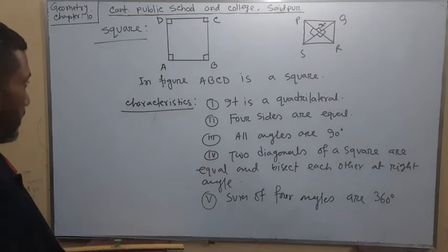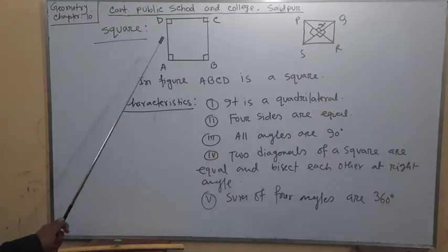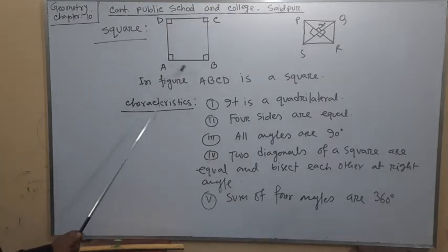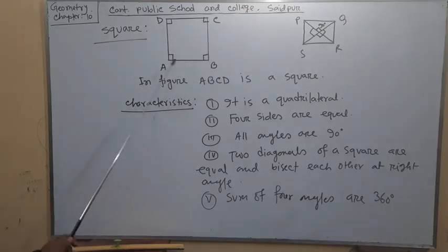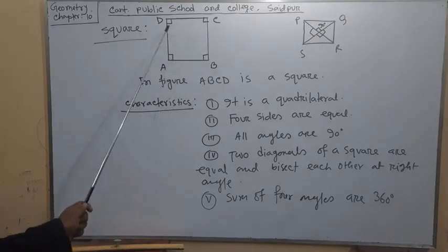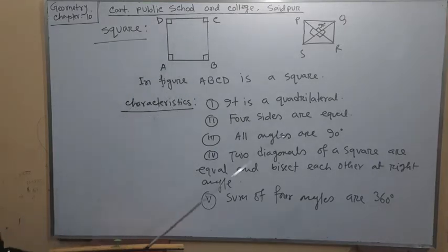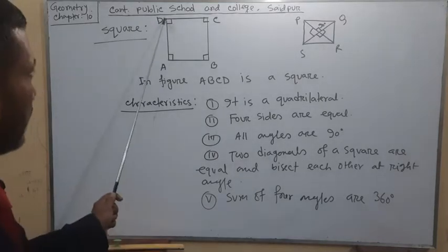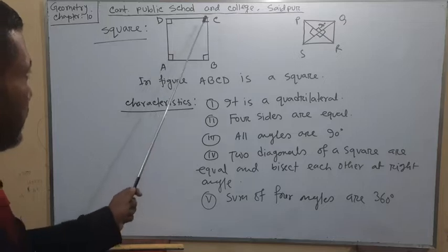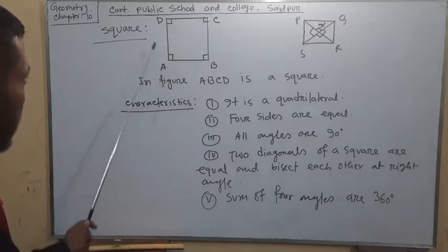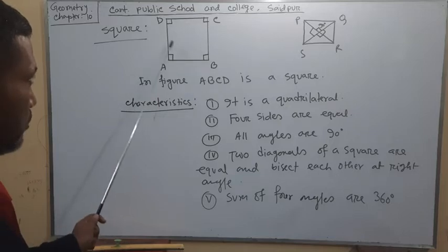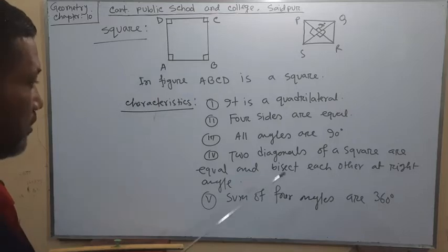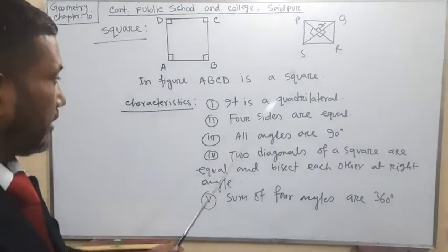The main characteristics of the square: the measure of the four sides will be equal; all angles will be 90 degrees. For the two diagonals, if we connect A and C, this will be a diagonal, and B and D, this also will be a diagonal. So, two diagonals are equal and bisect each other at a right angle.